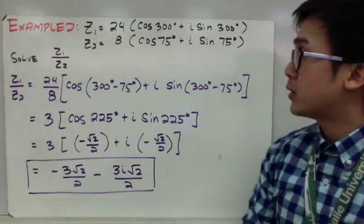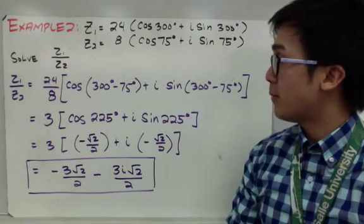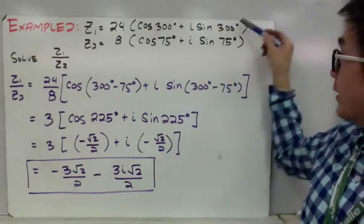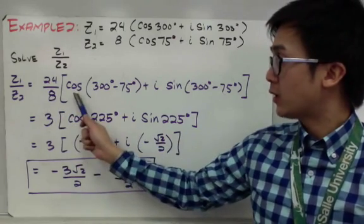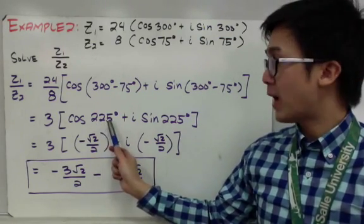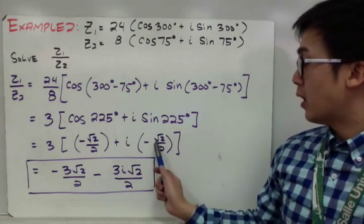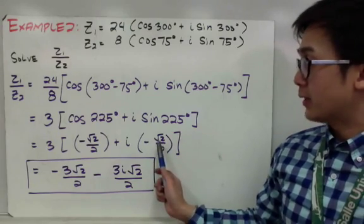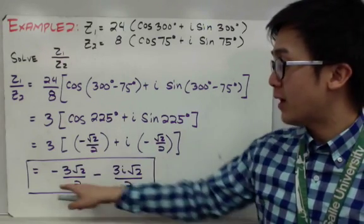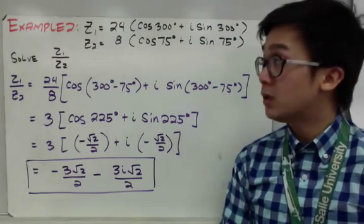We can also divide these complex numbers. To divide z₁ by z₂, divide the r's and subtract the angles: 24 ÷ 8 = 3, and 300° − 75° = 225°. Using the unit circle, cosine 225° = −√2/2 and sine 225° = −√2/2. Distributing 3 to both gives −3√2/2 − 3i·√2/2, which is our final answer.